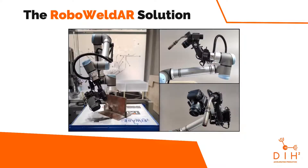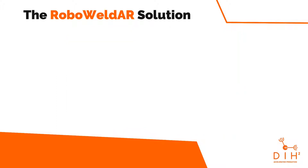RoboWelder is an autonomous welding system whose aim is to eliminate the need for predefined CAD models, allowing the creation of 3D models on the fly to guide the welding process for custom targets. The process consists of three steps.